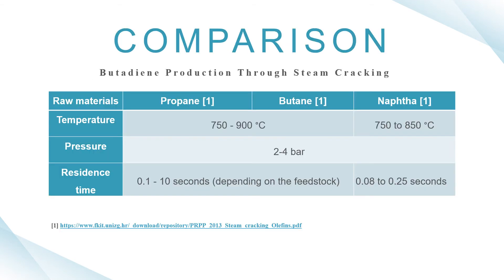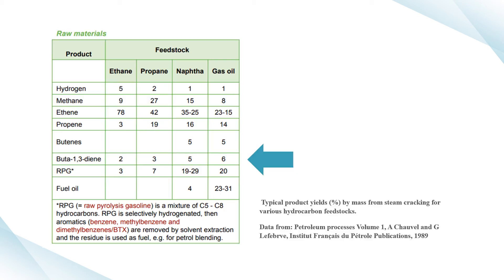Moving on to the comparison of butadiene production through steam cracking, there are three raw materials: propane, butane, and naphtha. Propane and butane require a temperature of around 750 to 900 degrees Celsius, while naphtha needs an operating temperature between 750 to 850 degrees Celsius. All three raw materials require a pressure of around two to four bar. Residence times for propane and butane range from 0.1 to 10 seconds depending on feedstock, while naphtha requires only 0.08 to 0.25 seconds.